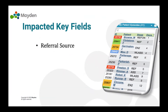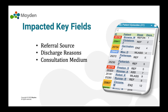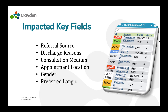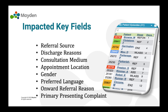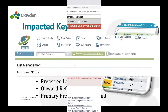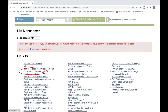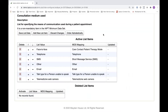Fields that will have new mapping options include: referral source, discharge reasons, consultation mediums, appointment location, gender, preferred language, onward referral reason, and the primary presenting complaint. Once you have located these fields within the mapping tool you will need to click on them, scroll down where you will see new mapping options being presented that you will need to review and update as appropriate.